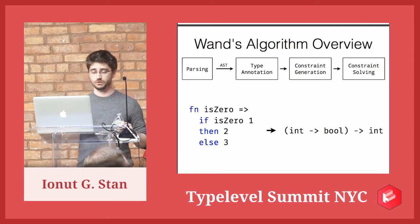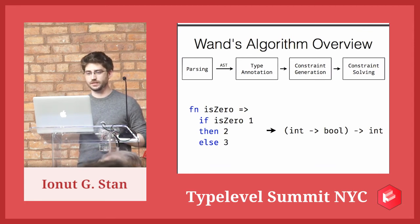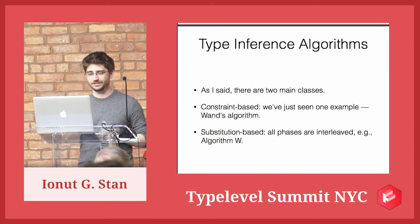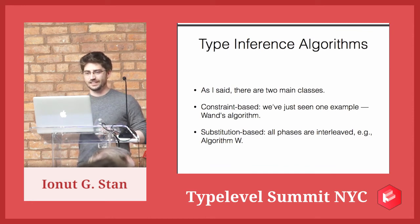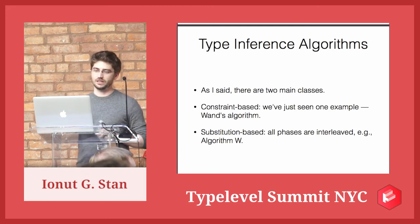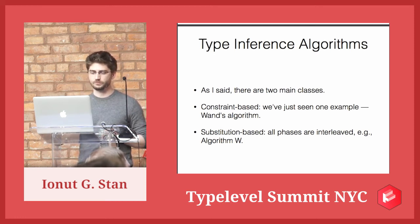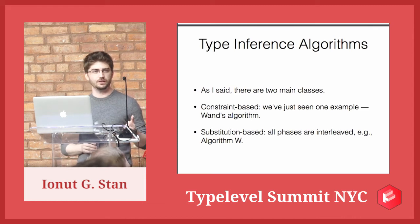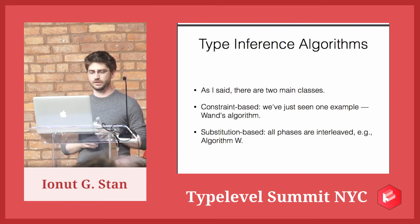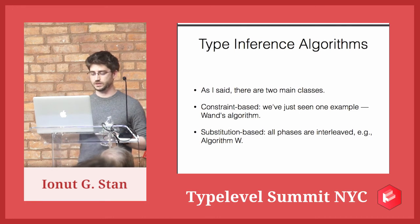So this was basically it. As I said in the beginning, there are two main classes of algorithms: this constraint-based one that I've just shown, and another called substitution-based where all the phases are interleaved — the famous algorithm W is an instance of it. I've tried to decipher that but couldn't, and the constraint-based one is much more approachable.